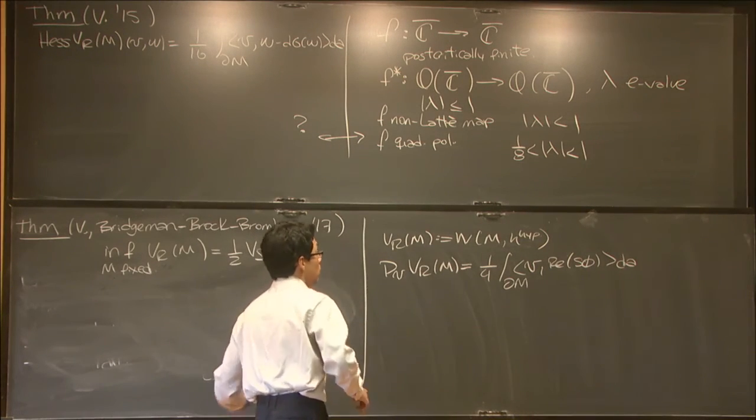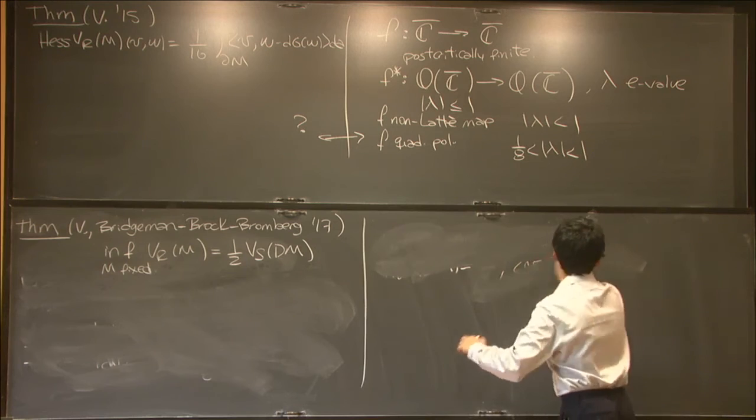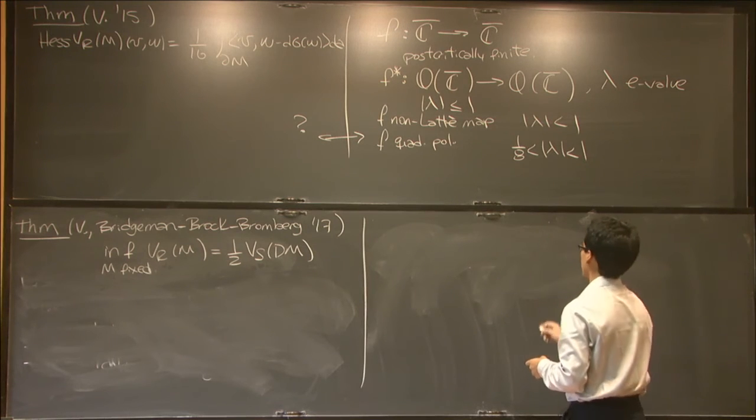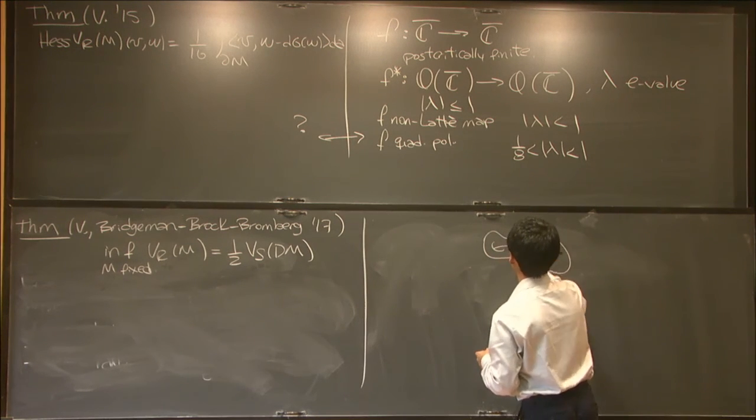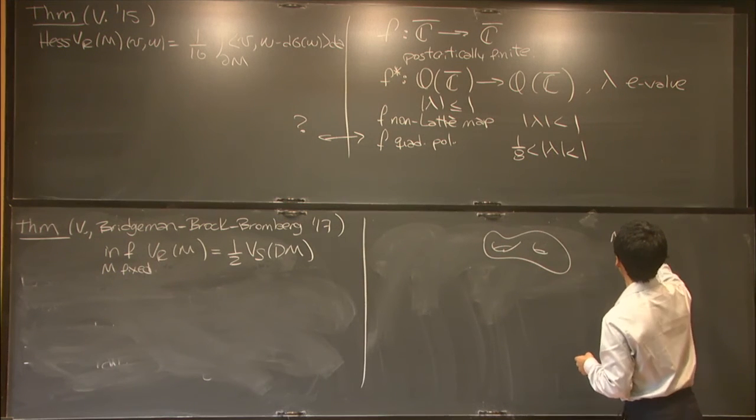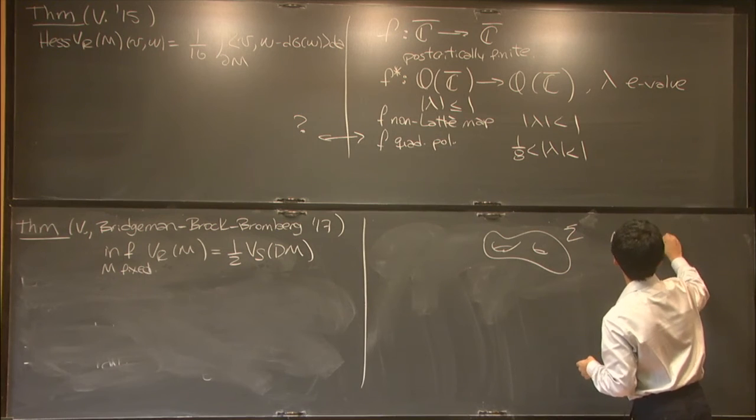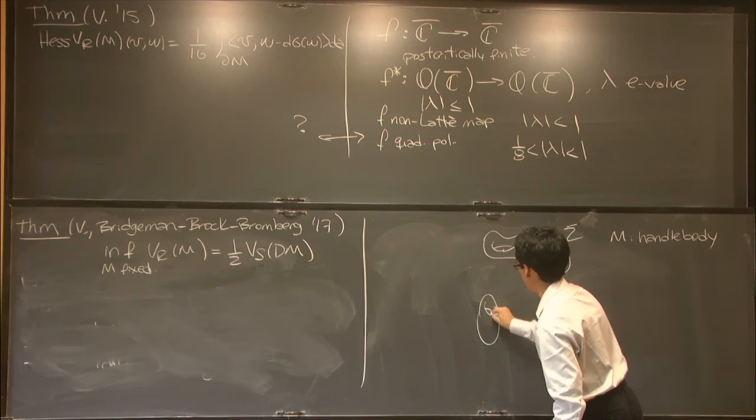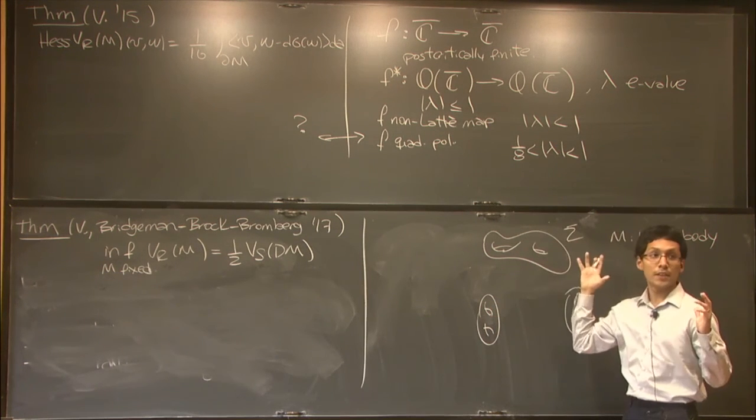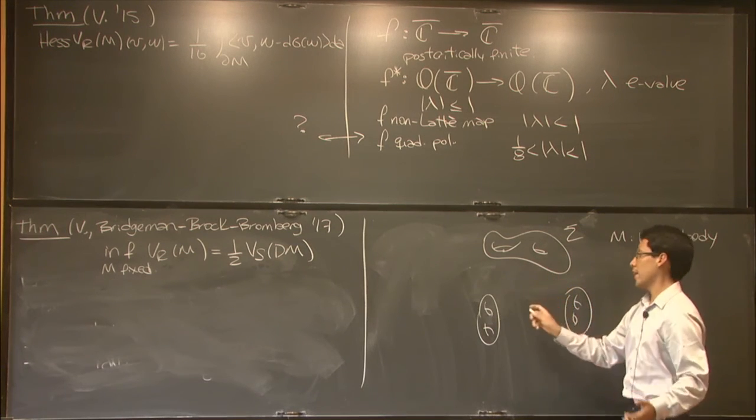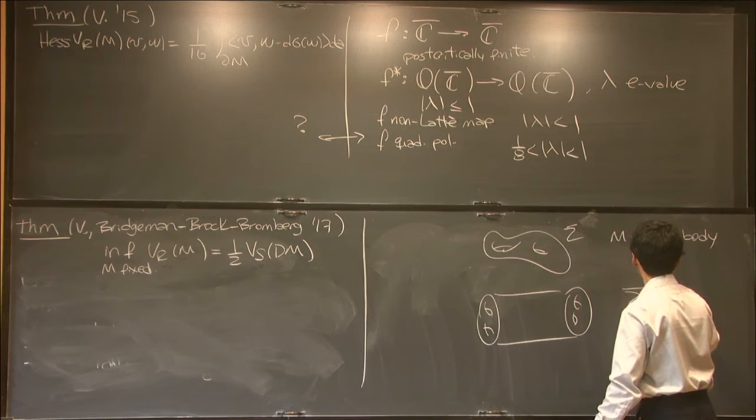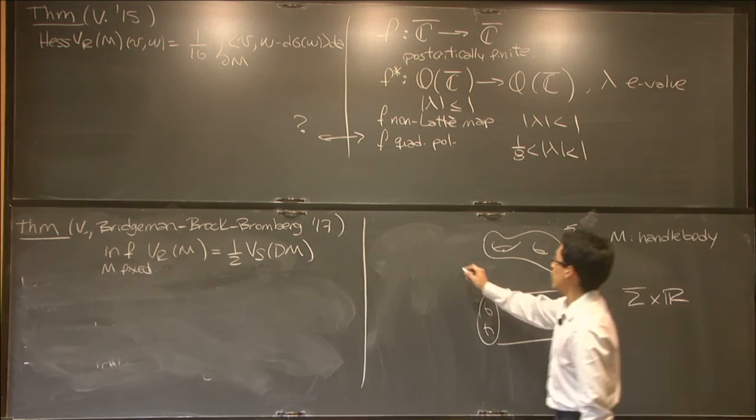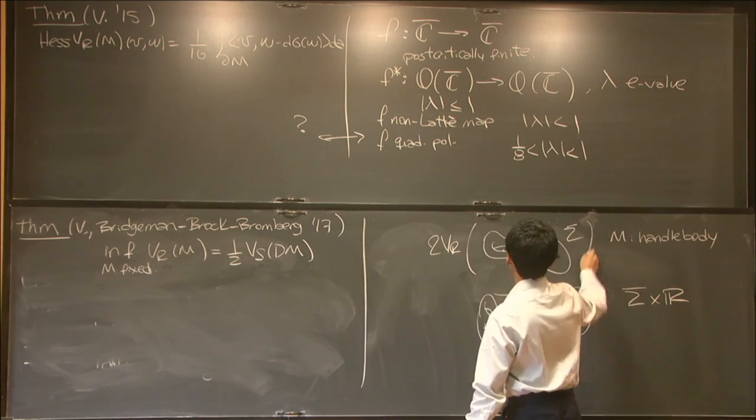Allow me to finish by giving a question posed by Maldacena that goes as follows. Take, say, a surface of genus 2, genus could be more than this, and take M to be a handlebody. And by a handlebody, what I mean is that instead of just seeing this surface as the boundary, you see it as the solid object that it is. And you can also take the product of that surface with a real line. So now you can start comparing twice the renormalized volume of this versus the renormalized volume of this part. And the question is if this is always going to be true.